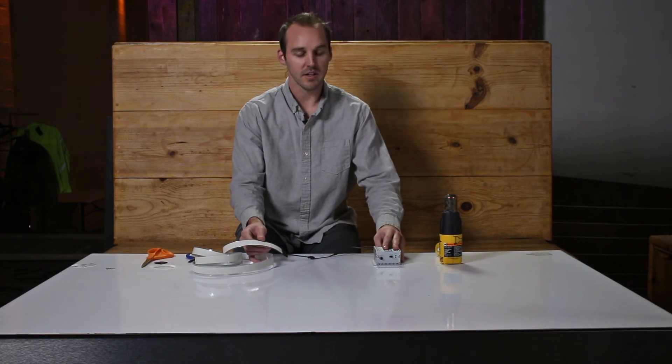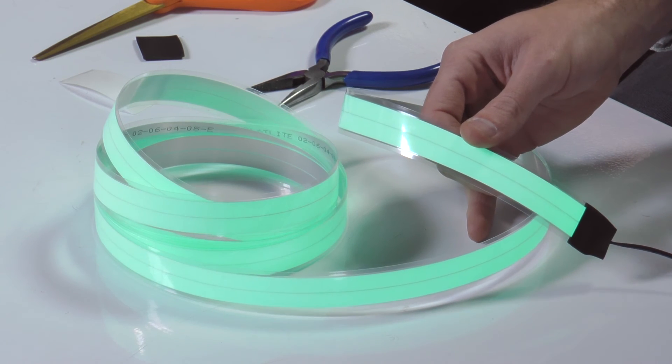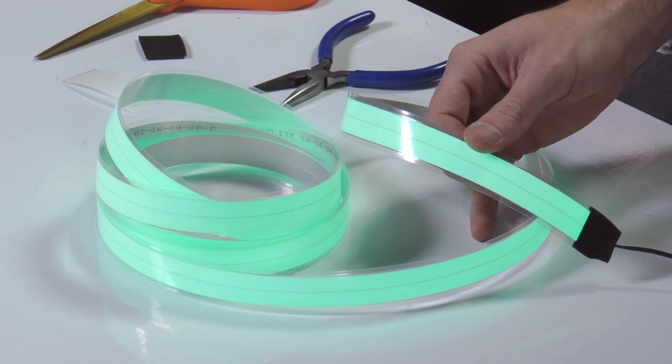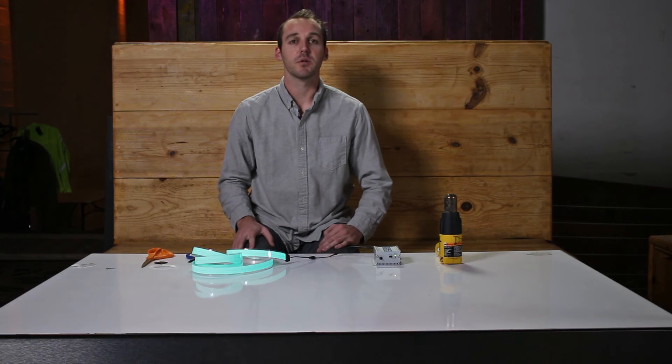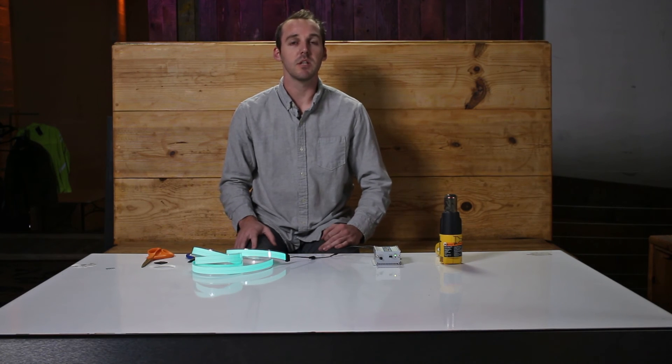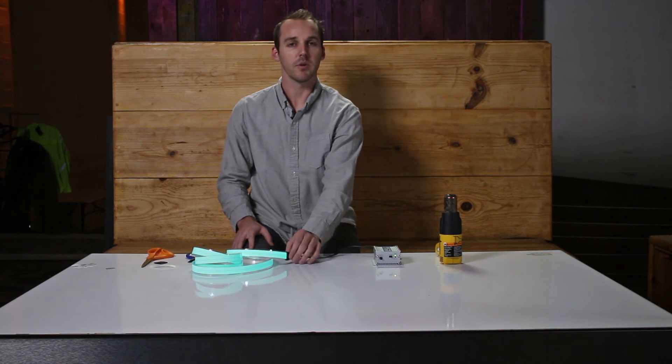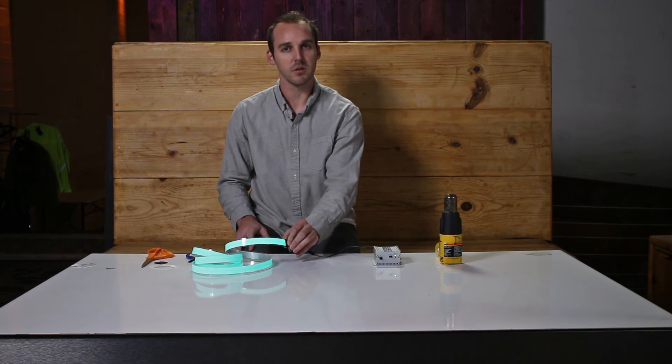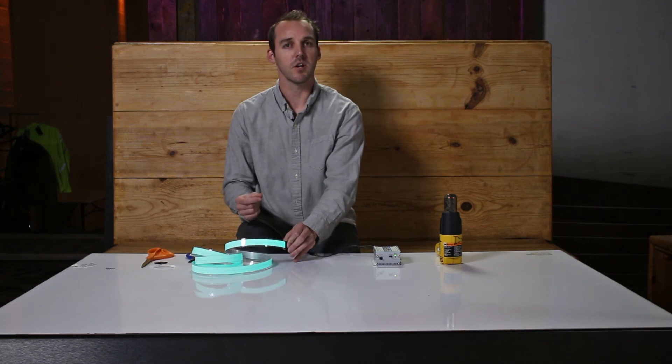And lastly we just need to test it. When connecting EL tape with the crimp connector method, the tape needs to go through a burn-in process. Sometimes this is very quick, under a second. What will happen is the connectors will actually burn into the tape, kind of like soldering.